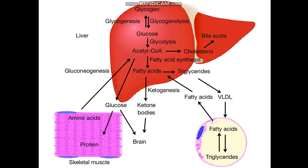Stored triglycerides in adipose tissue can be broken down to fatty acids and glycerol when required. Fatty acids enter the metabolic pathway and proceed to ketogenesis, producing ketone bodies utilized by the brain. Gluconeogenesis uses amino acids from skeletal muscle protein breakdown, which enters the liver and produces glucose — completing the cycle of energy supply to different organs.